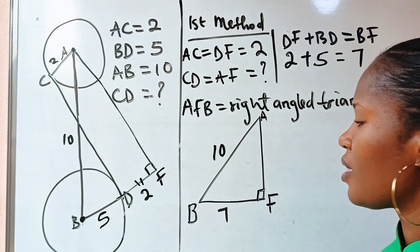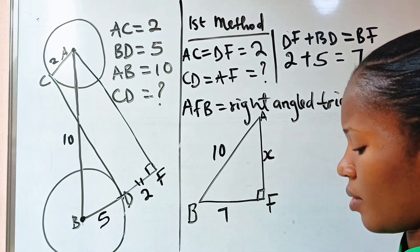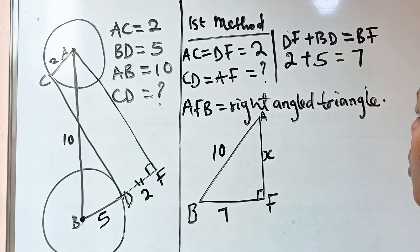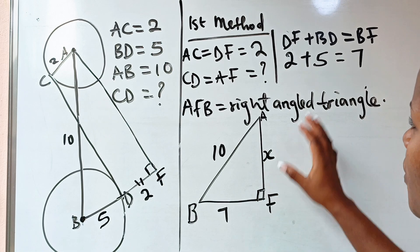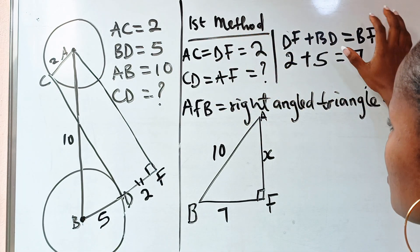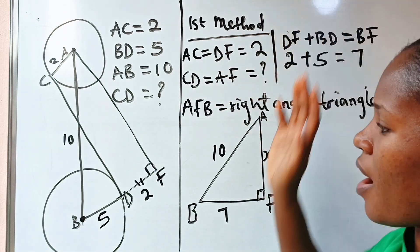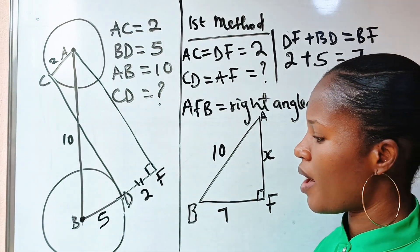Now we have AF. Let's call it x. Okay, using the Pythagorean theorem. All right, I think for now we don't need this, right? Let's just clean everything so that I will have space to solve my equation.